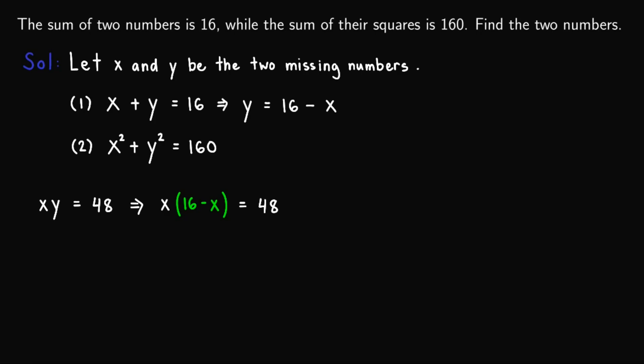So we now have an equation of only one variable. So we know how to solve for x in this case. Distributing x to the binomial, we'll obtain 16x minus x squared equals 48.